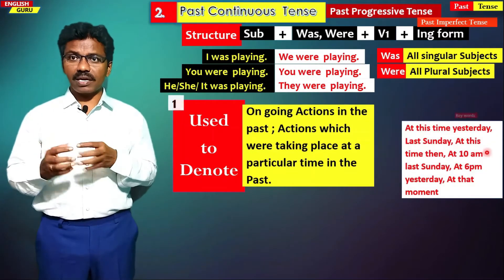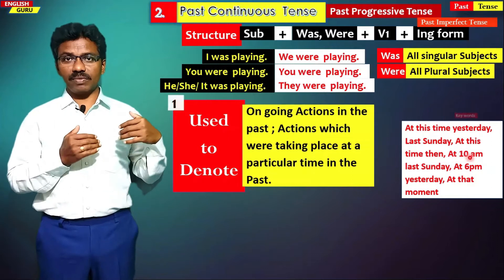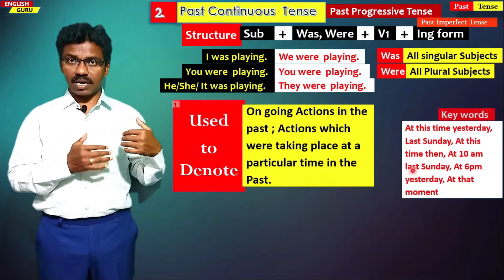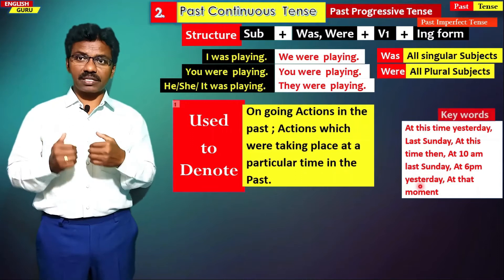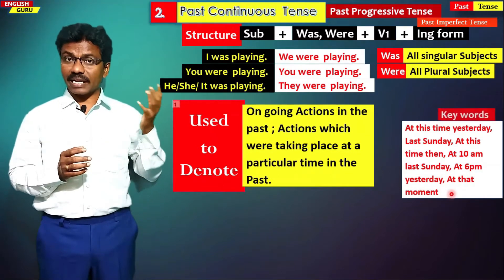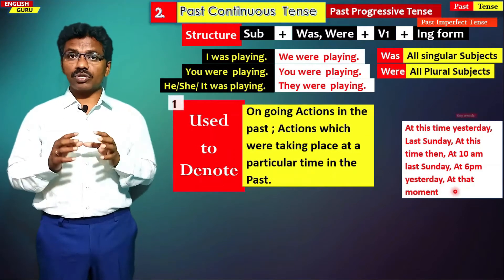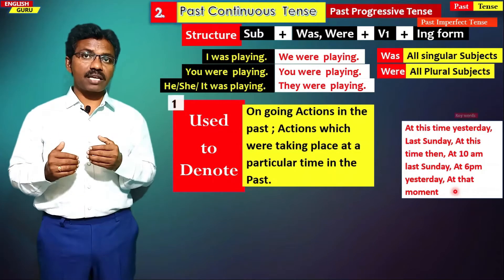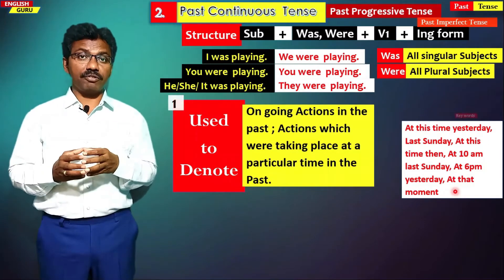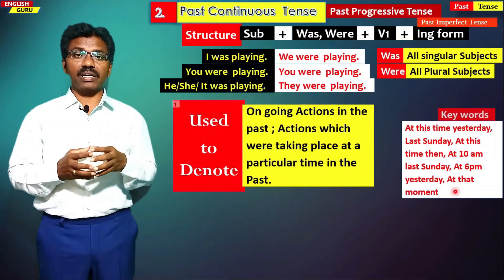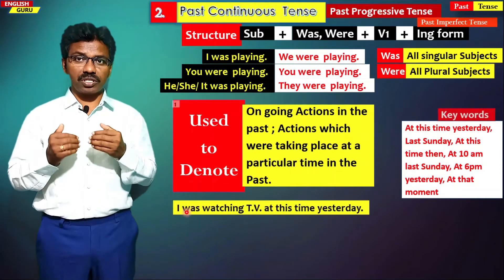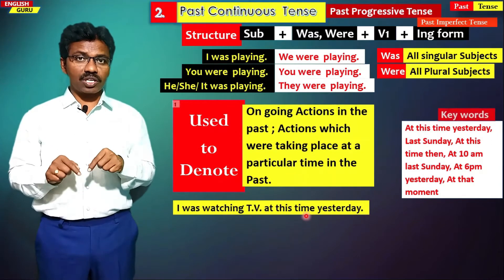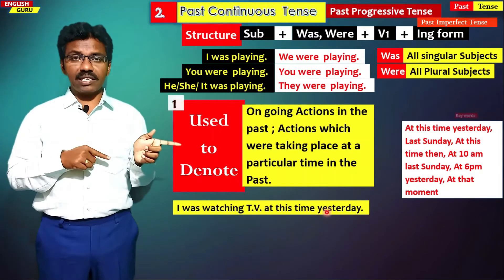Keywords for this tense include: at this time yesterday, at this time last Sunday, at this time then, at 10 p.m. last Sunday, at 6 p.m. yesterday, at that moment yesterday. Such keywords are used in past continuous tense. Let us take some examples.